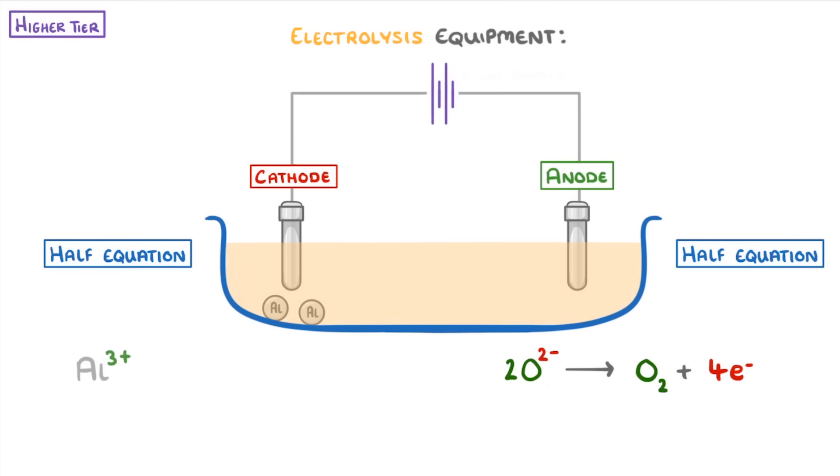Then at the cathode, we have aluminium 3+ ions, combining with 3 electrons to form molten aluminium.